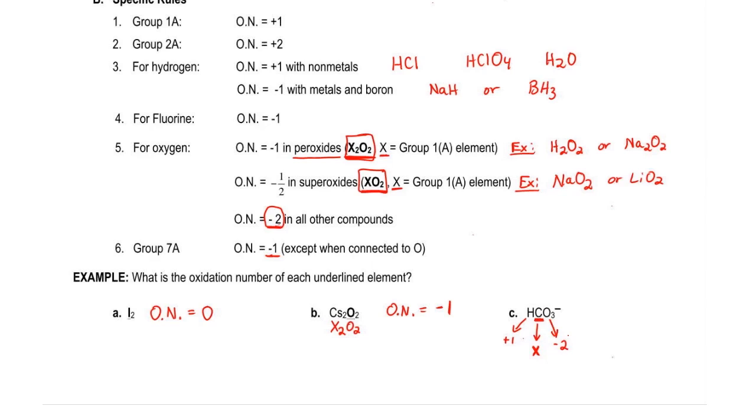Now we're going to use simple algebra to help us solve for the missing variable. We have one hydrogen that is plus one. There's one carbon, which is X, plus there are three oxygens.